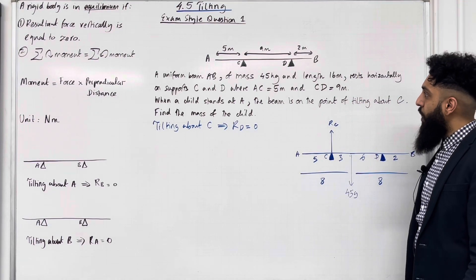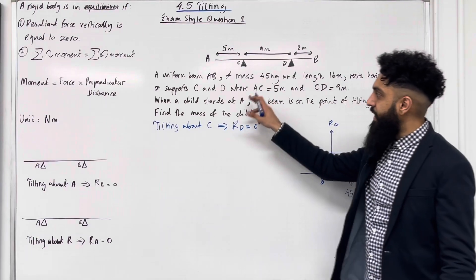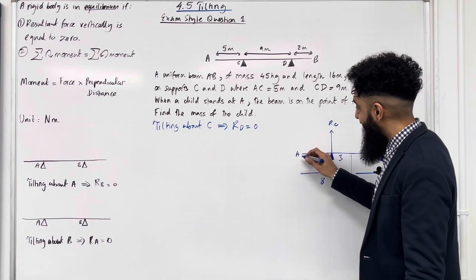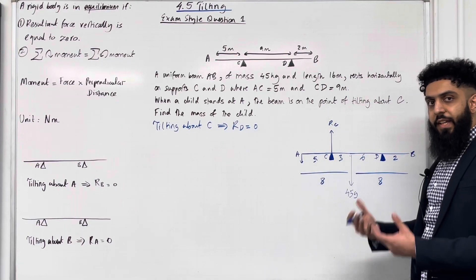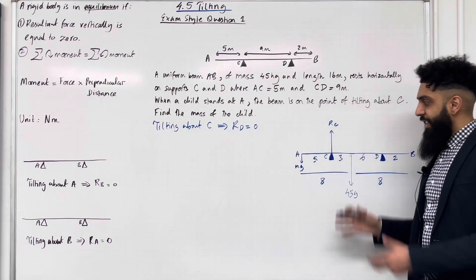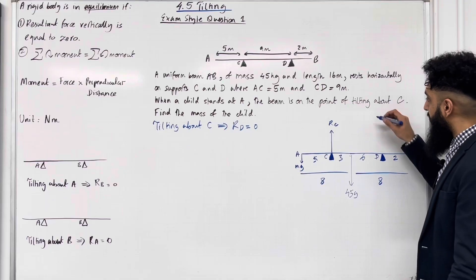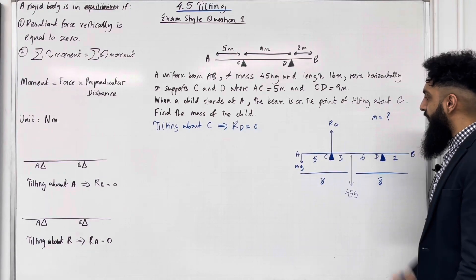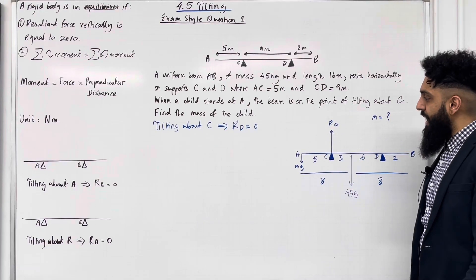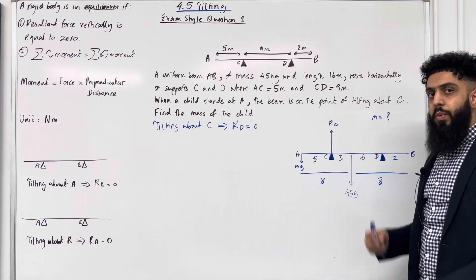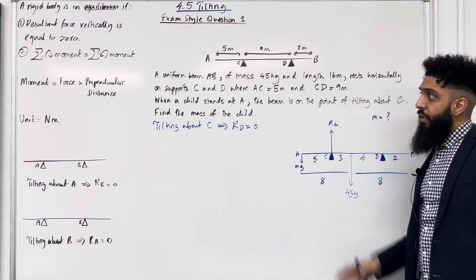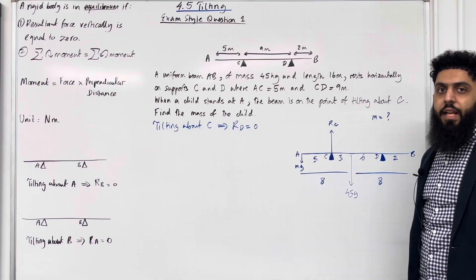A child stands at A, and we want to find the mass of the child. Let's call the mass M, hence the weight is Mg. That is my complete force diagram, and my target is to work out M. If I use condition 1 of equilibrium — resultant force vertically equals 0 — I'll get an equation with two unknowns: RC and M. So condition 1 does not help me calculate the value of M directly.